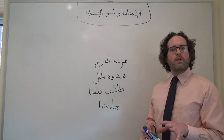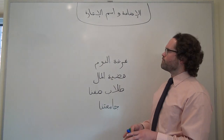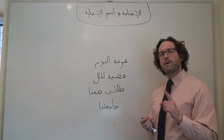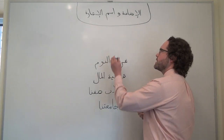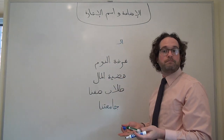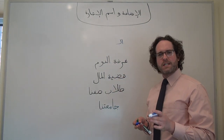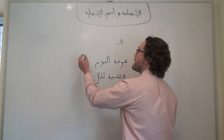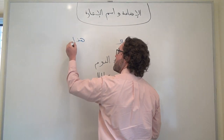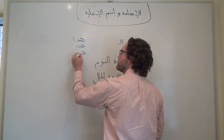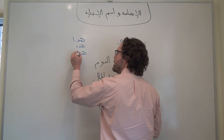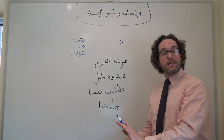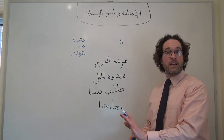In a definite إضافة, the first noun is definite by definition because it's part of the إضافة structure, but it's never going to take a definite marker like أل — never ever. And for kind of the same reason, it also can't be preceded by any demonstrative pronouns like هاذا, or هاذه, or هؤلاء — this, that, those. What we need to do instead is put them after the entire إضافة, at the end of the phrase.